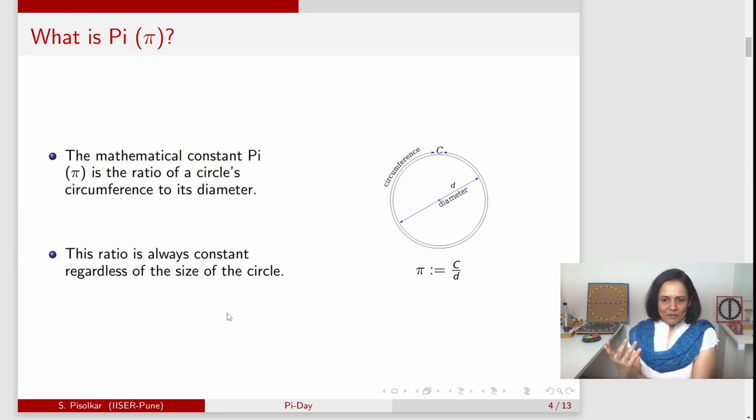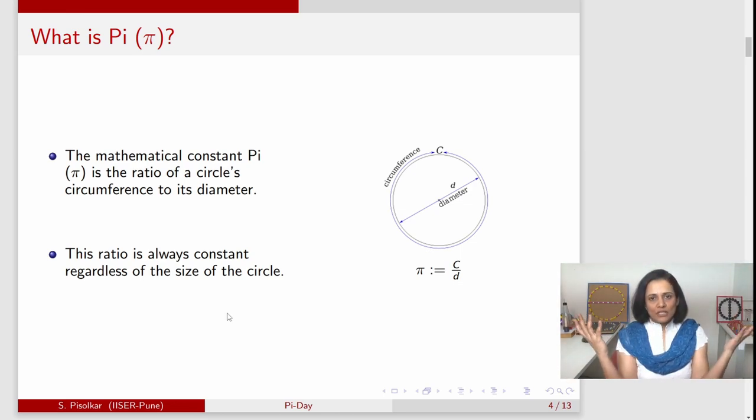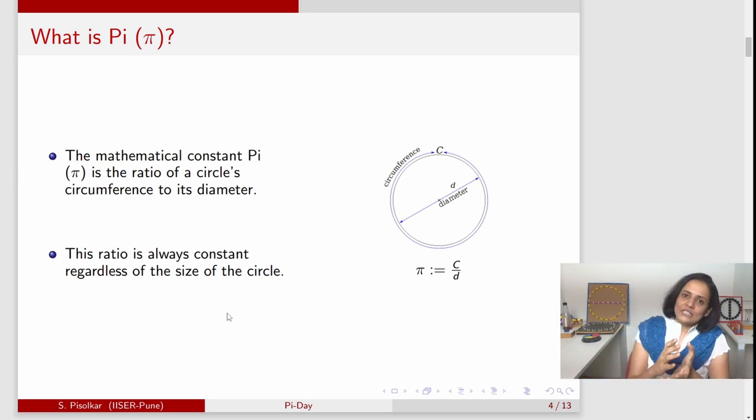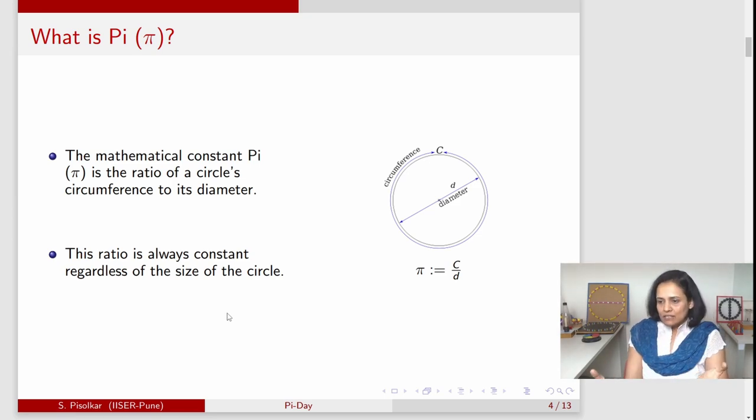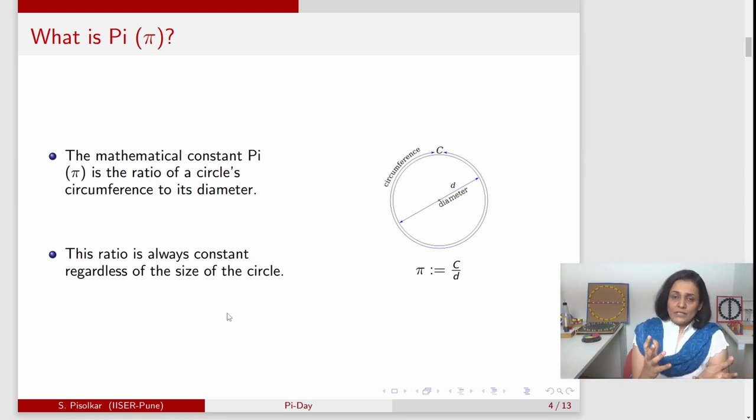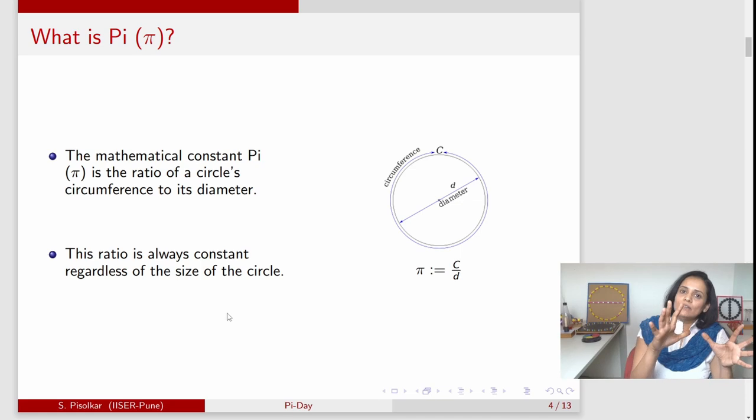This constant is so important that even after being known for the last 4,000 years, it's still included in school textbooks. This itself tells us the legacy of pi. The textbook definition tells us that you take a circle with circumference C and diameter D, divide the circumference by diameter, and you get some number. Whatever this number is, we call it pi.